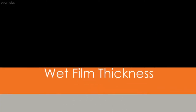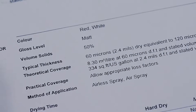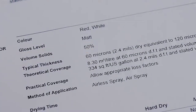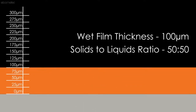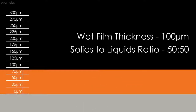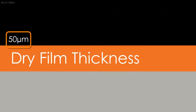Once the wet film thickness has been recorded, it can be used to predict the dry film thickness once the coating is cured. To calculate the dry film thickness, you need to know the solids to liquids ratio — also known as the volume solids content — which can be found on the coating's datasheet. If this ratio is 50%, then a wet film thickness of 100 microns will mean that the dry film thickness is 50 microns once the liquids have evaporated.